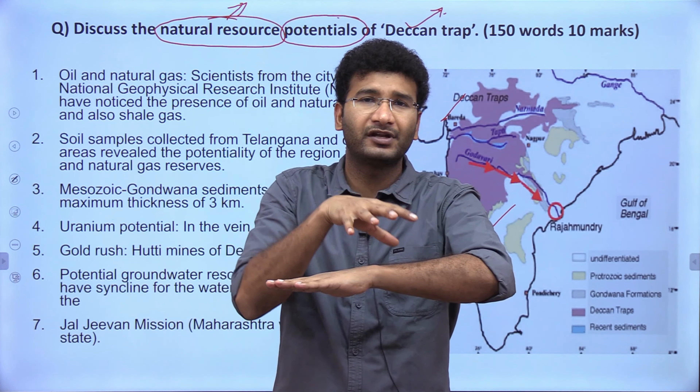The hard rocks of the Deccan Trap also have geosynclines and aquifers within them. These aquifers are potential areas where water gets stored, which can be mapped as a source for good water resources. The GJ-1 mission of the Maharashtra state government is exploring the potential of underground or groundwater. Older rocks tend to have stronger synclines, which can be utilized for water storage capacity.